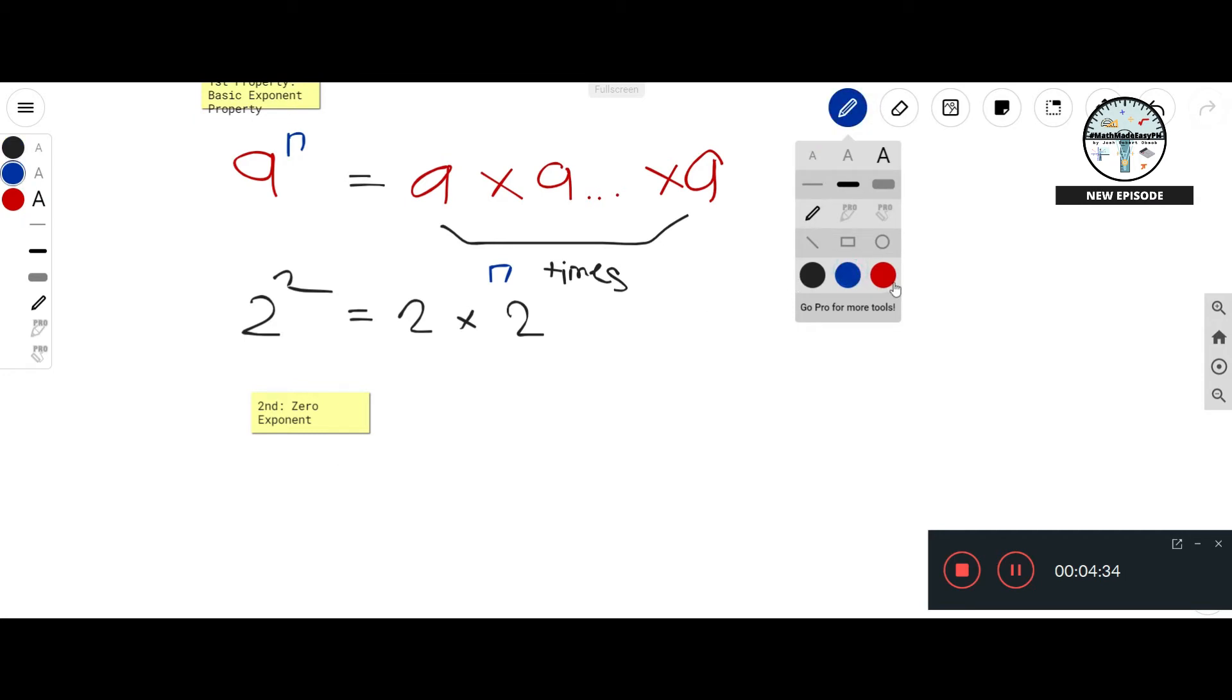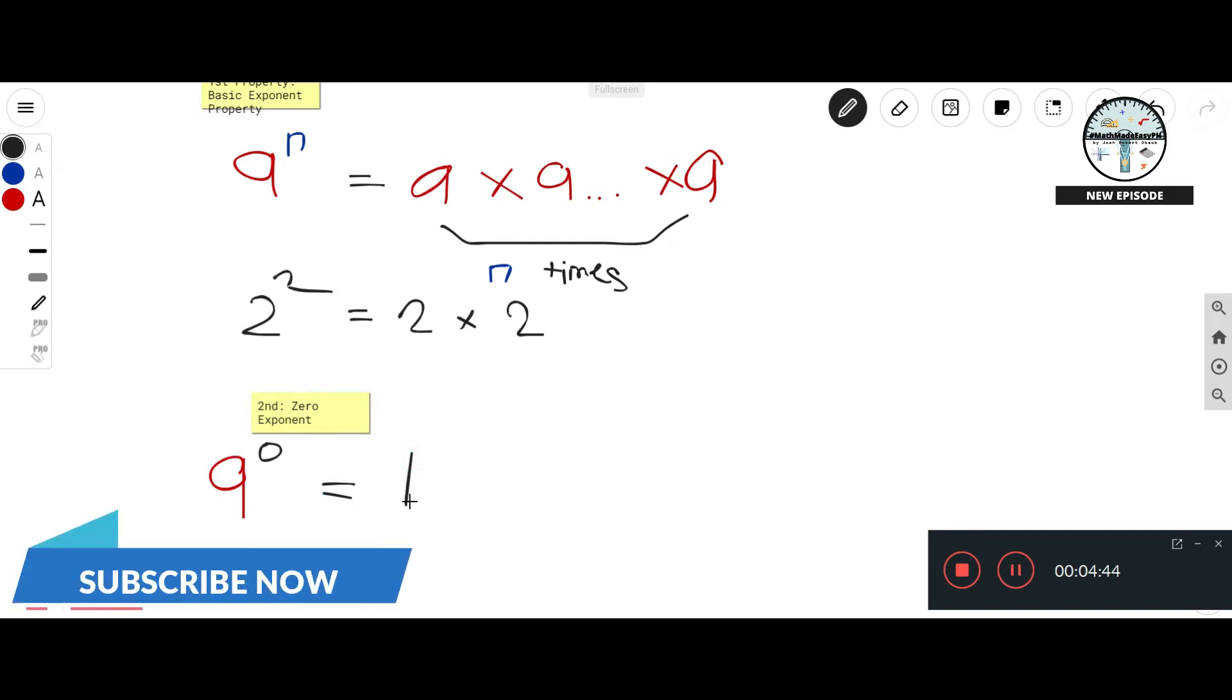This is the zero exponent property. So we have a raised to zero and we know that is equal to one. Question: do you wonder why a raised to zero is equal to one? Well here's the explanation.